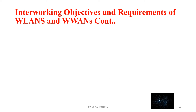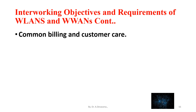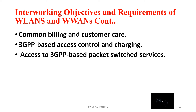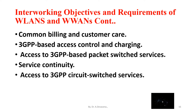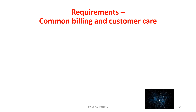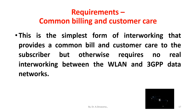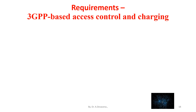Requirements of WWANs and WLANs: the first requirement is common billing and customer care. The second requirement is 3GPP-based access control and charging. The third requirement is access to 3GPP-based packet switched services. The fourth requirement is service continuity. The fifth requirement is access to 3GPP circuit switched services. Common billing and customer care is the simplest form of interworking — it provides a common bill and customer care to the subscriber but otherwise requires no real interworking between the WLAN and 3GPP data networks.